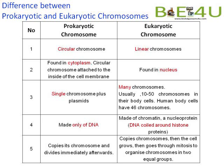Let us summarize the main points. In prokaryotic chromosomes the chromosome is circular, whereas in eukaryotes it is linear. In prokaryotes, the genetic material is scattered in the cytoplasm, whereas in eukaryotes it is found in the nucleus. Prokaryotes have a single circular chromosome; extrachromosomal particles are called plasmids. Eukaryotes have many chromosomes, usually 10 to 50. Prokaryotic chromosomes comprise DNA only, whereas in eukaryotic chromosomes the DNA is complexed with basic proteins called histones. Regarding division: in prokaryotes DNA is copied and divides immediately after duplication, whereas in eukaryotes there is a G2 phase where the cell grows and prepares for mitosis.